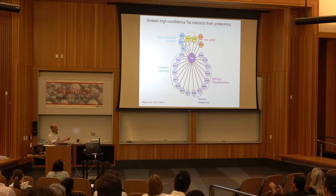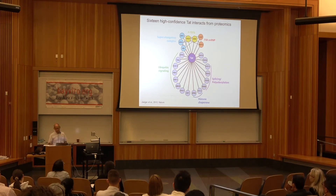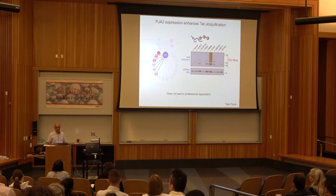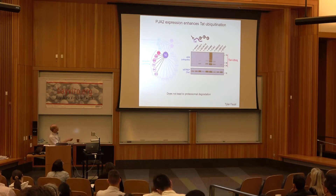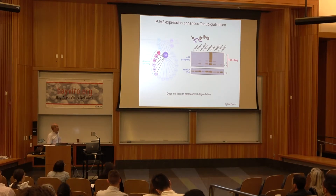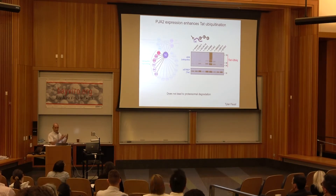We focused on ubiquitination factors and asked whether any of them might directly modify TAT itself. It's been known that TAT is ubiquitinated, so we looked at a panel of ligases to see which might directly ubiquitinate TAT. Indeed, one of them — PGA2 — directly ubiquitinates TAT. Importantly, this ubiquitination is not a mark that leads to proteasomal degradation; it's a functional mark not affecting stability.